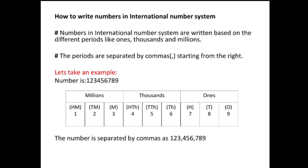Now let's move on to how to write a number in the international number system. Numbers are written based on their periods — ones, thousands, and millions. To show these different periods, we separate the digits by placing a comma after every three digits, always starting from the right corner. I keep emphasizing this because students often start from the left and make mistakes, so always place commas starting from the extreme right.